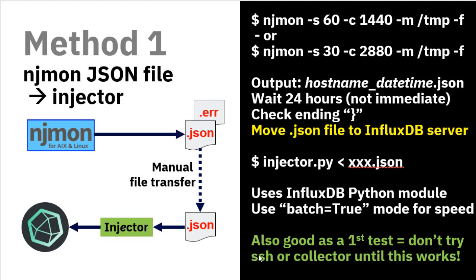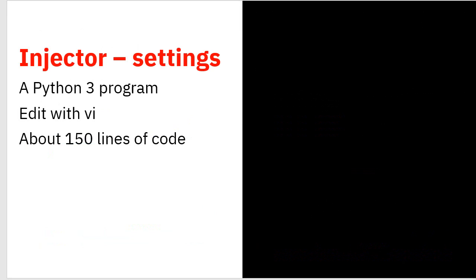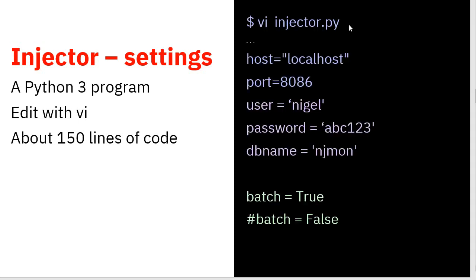This is actually a pretty good first test when you're setting things up. The injector is written in Python 3, it's just a text file of about 150 lines. It's slowly growing as we add optimization, particularly for batch mode, and we've added tags — which are very important with InfluxDB to help graph data in group sets. If we edit that injector.py file, ignoring the comment lines starting with a hash, the localhost setting means InfluxDB is running on the same server as the injector. Port 8086 is the REST API port number for InfluxDB — that's the default.